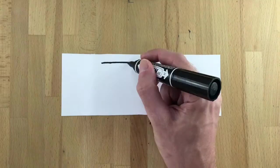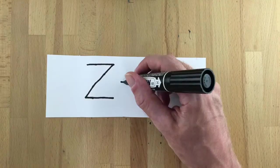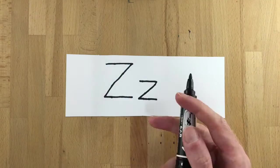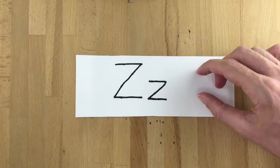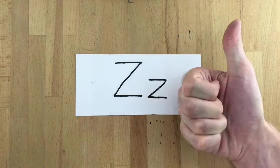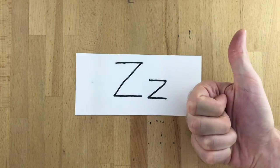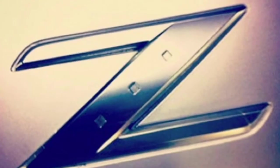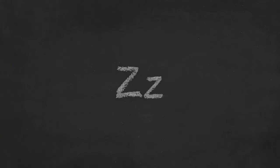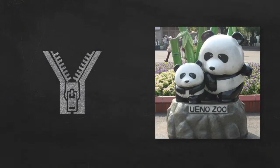Let's get started. The letter Z. This is the letter Z. This is big Z and small Z. Z sounds like Z, as in zipper or zoo.